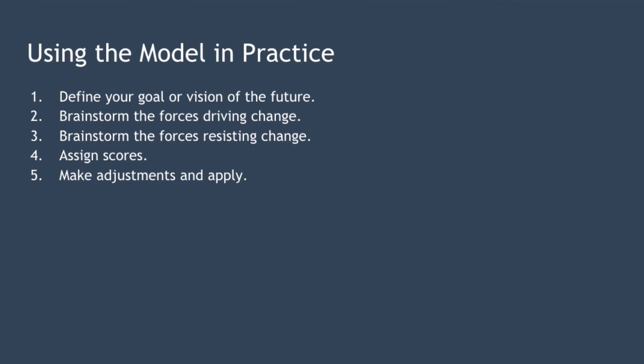The final step is called 'make adjustments and apply.' This step represents the key strength of the model because it ensures you're crystal clear that the change is the right thing to do, and you can explain the reasons for change in a manner most likely to get your team's support. Your task here is to try to increase your rating for each of the driving forces and reduce your rating for each of the resisting forces. Sometimes you'll need to draw up an action plan to make it happen.